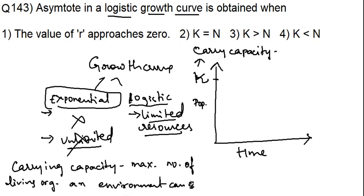Carrying capacity is the maximum number of living organisms an environment can support. So every environment or every ecosystem will have a threshold. It will be able to support only a certain amount of animals because the resources are limited.